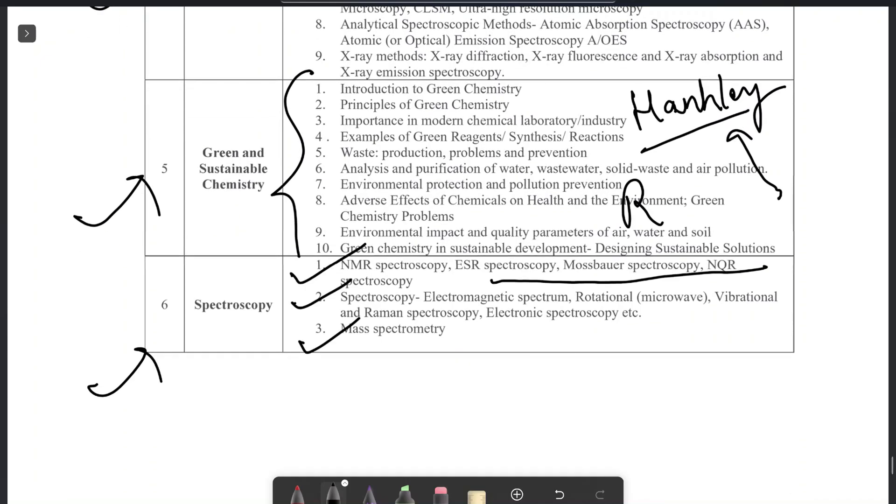Now spectroscopy. NMR spectroscopy, ESR spectroscopy, Mossbauer, NQR, R.S. Drago is a very good book and briefly describes all about this. Next is your rotational spectroscopy you can read from Banwell. Mass spectroscopy is also explained. This spectroscopy is basically a physical spectroscopy. And the organic spectroscopy you can read from Pavia. So this is all about the syllabus.